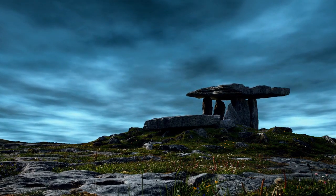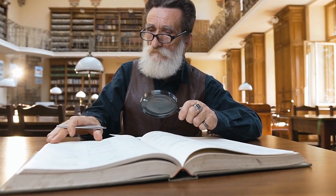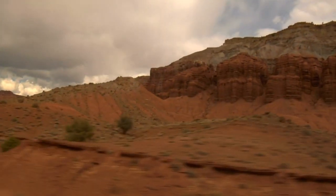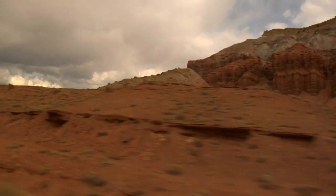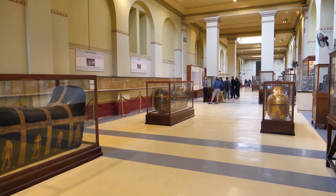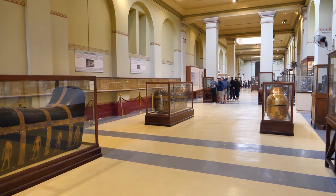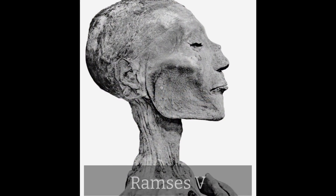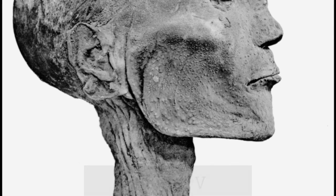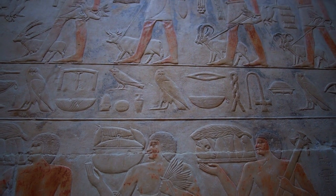Smallpox most likely emerged thousands of years ago, however we do not have concrete evidence to pinpoint its exact date. We do have Egyptian mummies from the New Kingdom, which lasted from 1750 to 1085, that have skin lesions akin to smallpox. Pharaohs like Ramses V have the trademark bumps all over their bodies, which is strong evidence to support that smallpox was impacting the ancient world.